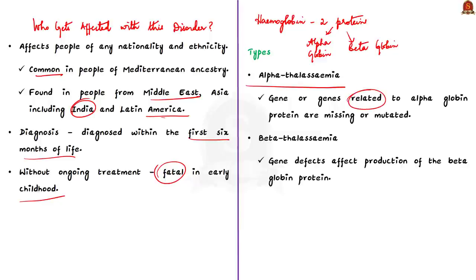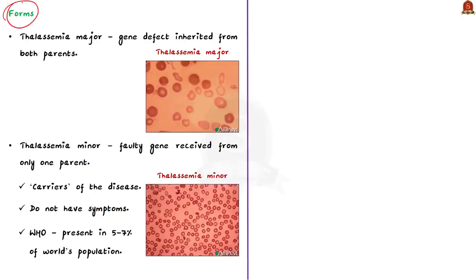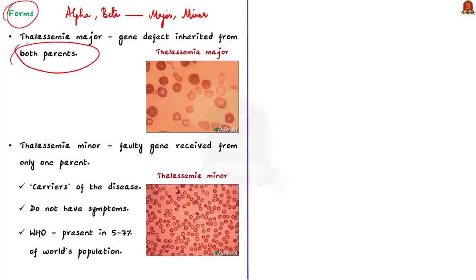Alpha thalassemia occurs when a gene or genes related to the alpha globin protein are missing or mutated. Beta thalassemia occurs when similar gene defects affect production of the beta globin protein. Both alpha and beta thalassemia include two forms: thalassemia major and thalassemia minor. To develop thalassemia major, one must inherit the gene defect from both parents; for thalassemia minor, a faulty gene from only one parent is sufficient. People with thalassemia minor are carriers and most of the time do not have symptoms. According to the WHO, around 5 to 7 percent of the world's population have thalassemia minor.